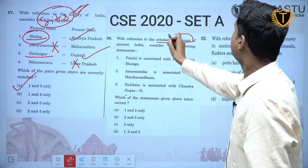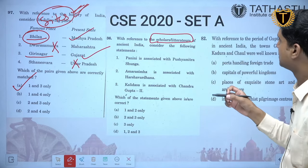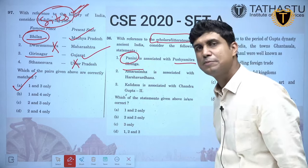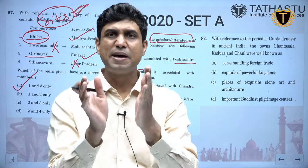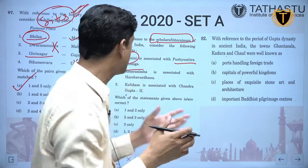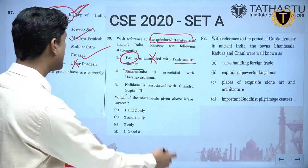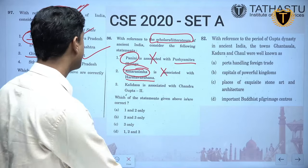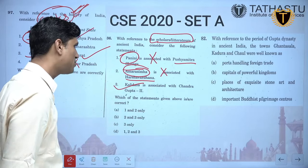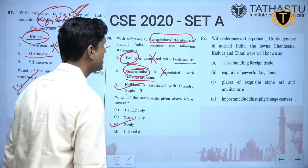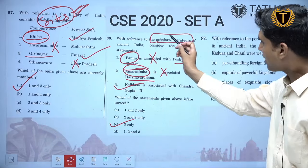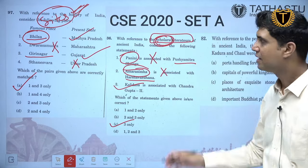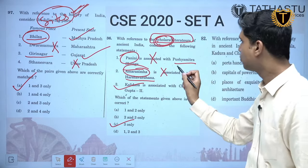Regarding scholars of ancient India: Panini is associated with Pushyamitra Sunga — wrong, because Panini is in the 5th–6th century BC while Pushyamitra Sunga is in the 2nd century BC, so they cannot be contemporary. Amarasimha is associated with Harshavardhan — wrong, because Amarasimha was one of the Navratnas of Chandragupta II. Kalidasa is associated with Chandragupta II — correct, he was one of the Navratnas. So only statement 3 is correct.